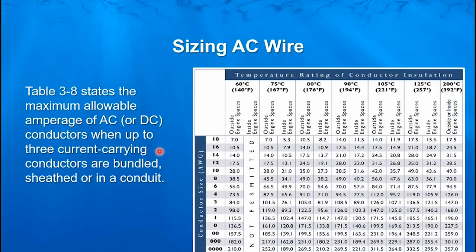If we go to Table 3-8 — which is for up to three current-carrying conductors — using the same 10 gauge at 105°C: because we've added two other current-carrying conductors, we're now only allowed to put 42 amps instead of 60 through the wire outside engine spaces, and only 35 amps inside engine spaces. As you can imagine, the subsequent tables I mentioned — the more conductors you add together — the lower the allowable amperage is going to go for that wire included with many other cables.